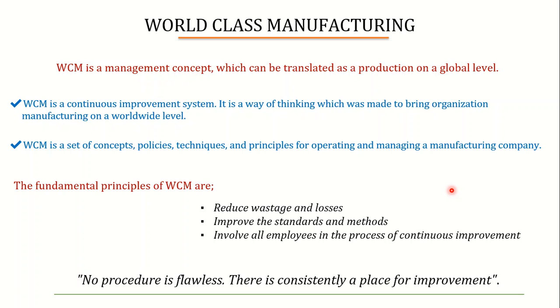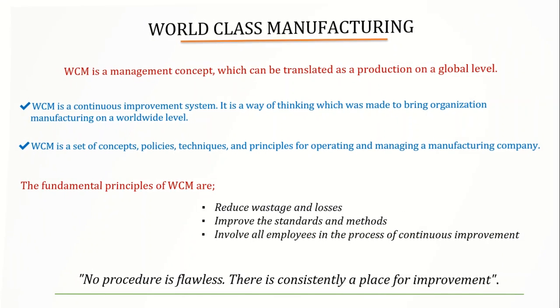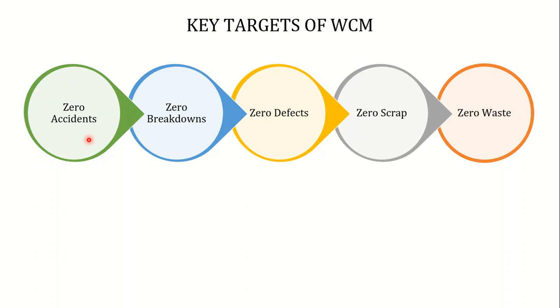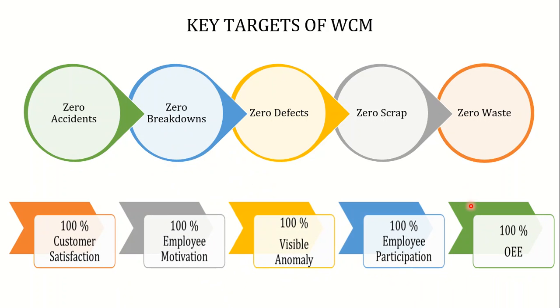The key targets of WCM include zeros and hundreds. The zeros we want to achieve are: zero accidents, zero breakdowns, zero defects in our product, zero scrap, and zero waste. The hundreds we want to achieve are: 100% customer satisfaction, 100% employee motivation, 100% visible anomaly — meaning we want to know about every variation in our system — 100% employee participation, and 100% overall equipment effectiveness.